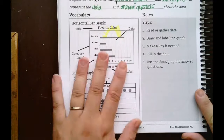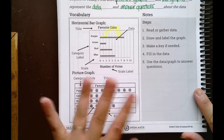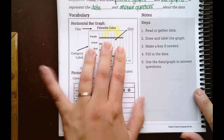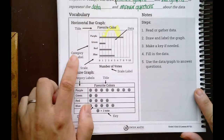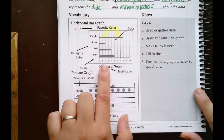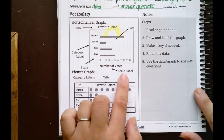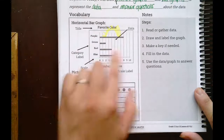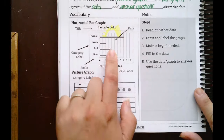Our vocabulary includes horizontal bar graph. They didn't include vertical bar graph, but remember that if we do have to work with vertical bar graphs, that's exactly like horizontal bar graphs except it's turned on its side. We have category labels on the left for horizontal bar graphs, a scale at the bottom showing the number of votes, a scale label, and the title up at the top. The data is put on the graph in bars.